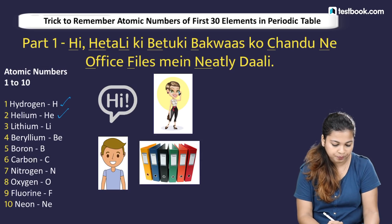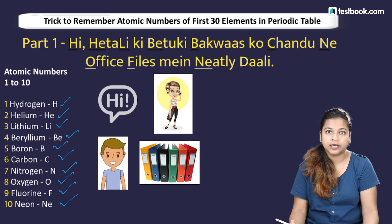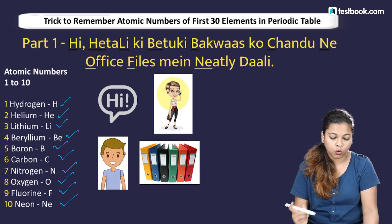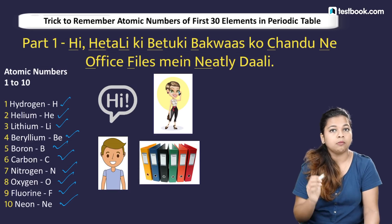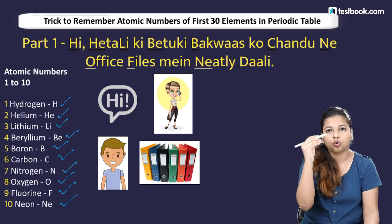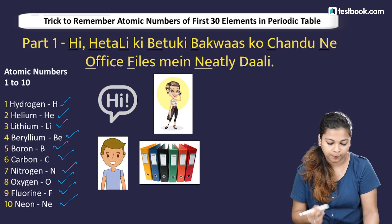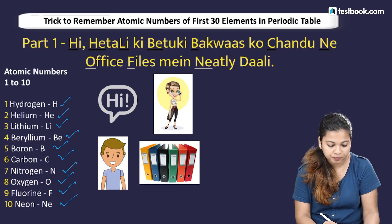The first 10 elements with atomic numbers 1 to 10 are: hydrogen, helium, lithium, beryllium, boron, carbon, nitrogen, oxygen, fluorine, and neon. We will remember these with a sentence chronologically.